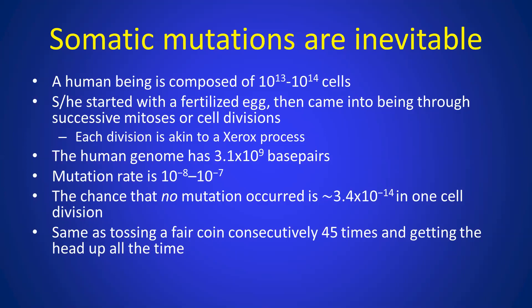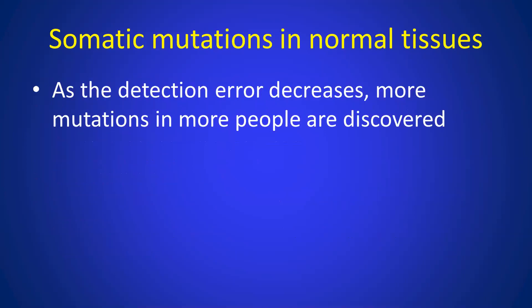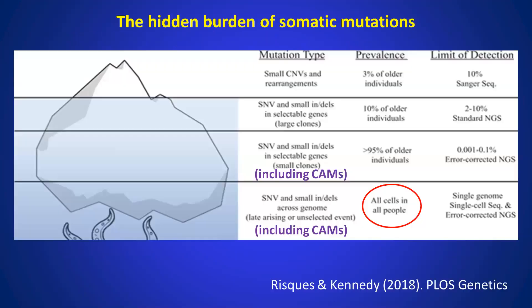It's essentially the same as tossing a coin 45 times consecutively and always getting heads up — a very, very small probability. In other words, in one cell division, you almost surely will get a mutation somewhere. As detection error decreases, more new mutations will be discovered.